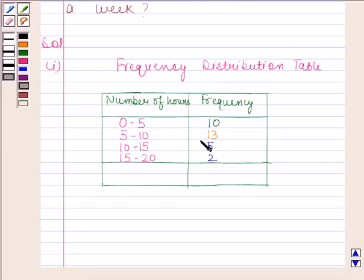Similarly, we will fill the frequency of other intervals. Now, when adding all these frequencies, we get 30. This is the required frequency distribution table. So this completes the first part.